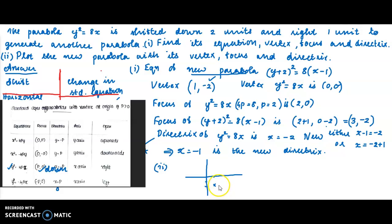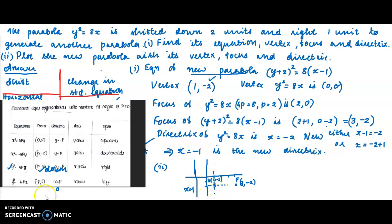The focus is at (3, −2). We plot x = 3, y = −2. The vertex is at (1, −2). The directrix is x = −1. Considering the vertex (1, −2) as the local origin, we plot the graph like y² = 8x opening to the right.